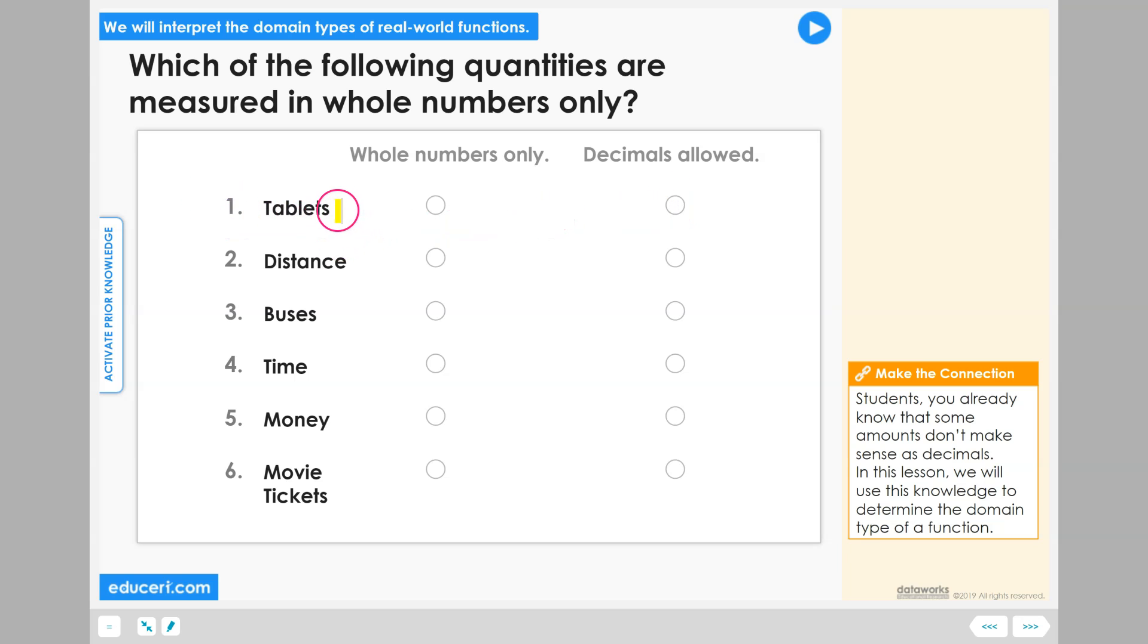Number one, tablets. If you have a tablet such as an iPad, how would you count tablets? Well, you can have one to three of them, but it wouldn't make any sense to have one-and-a-half tablets.